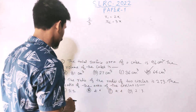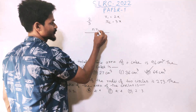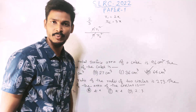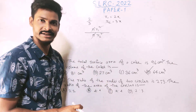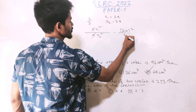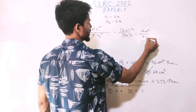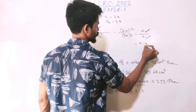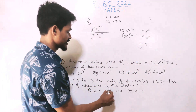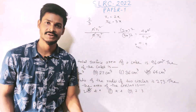To find the ratio of their areas: area equals pi r squared. So ratio is pi times (2x)² over pi times (3x)², which gives 4x² over 9x². x² cancels, giving 4 by 9. So the ratio of areas is 4 is to 9.